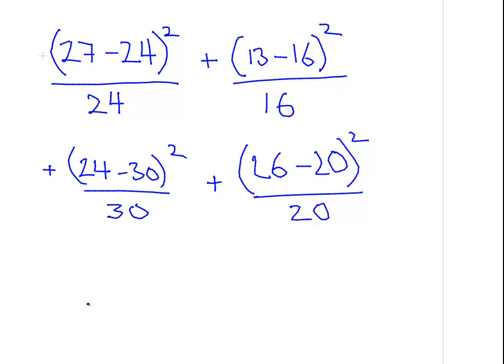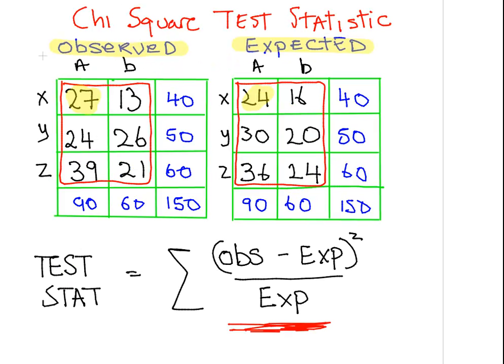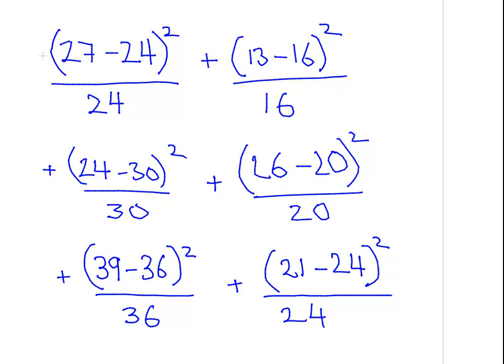And I will let you check this very quickly. What I'm going to do is just do the last two in one fell swoop. If you want to try out the calculation for the last two parts, just pause the video and see if you get what I get. So I'm going to do the rest now - 39 minus 36 squared, that's 3 squared which is 9 over 36, and 21 minus 24, that's minus 3, when you square that you get 9 over 24.